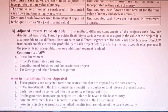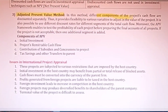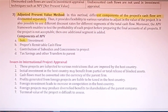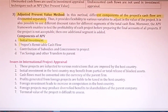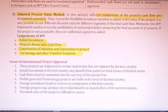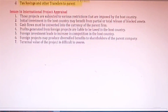In the Adjusted Present Value (APV) method, different components of a project's cash flows are discounted separately — that means every cash flow is discounted individually. The main components of APV are: the initial investment, remittance of the cash flow (how much cash flow will be generated), contribution of subsidies and concessions, tax savings, and other transfers. There are some other issues in this unit you can also go through.